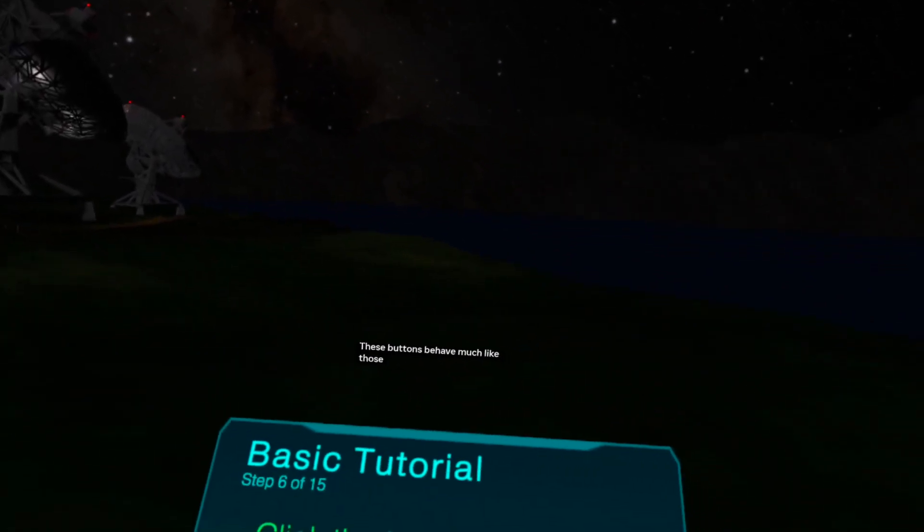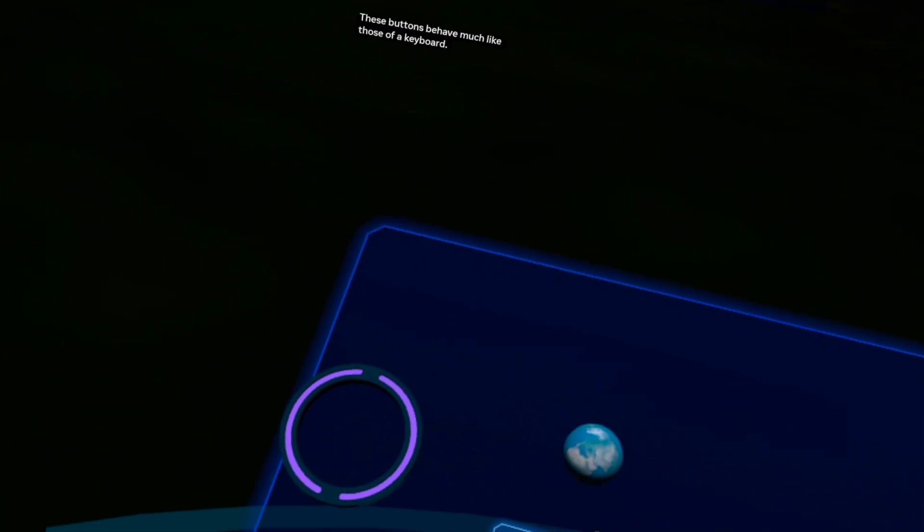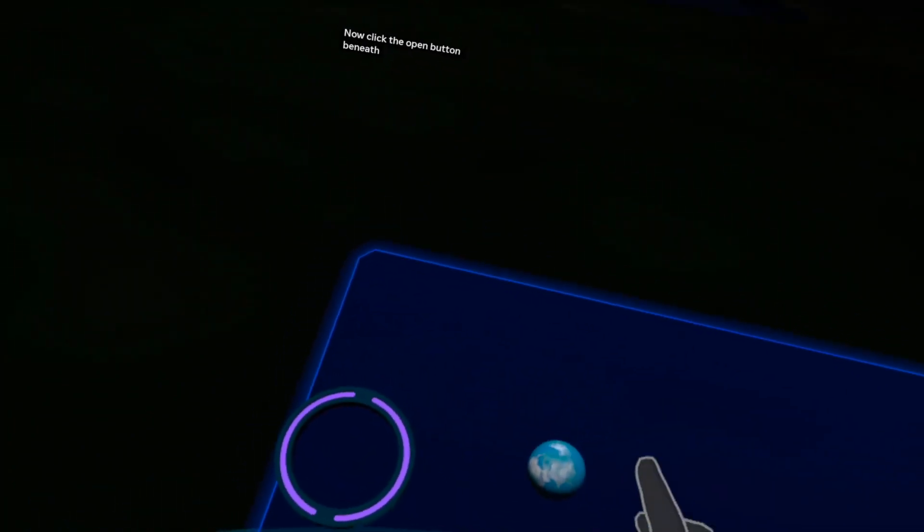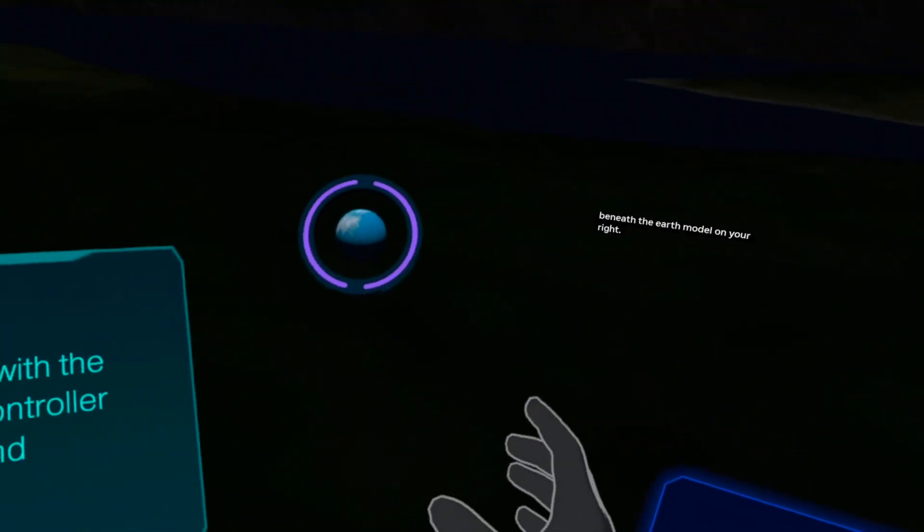The Atlas is controlled mainly through buttons. These buttons behave much like those of a keyboard. Now click the open button beneath the Earth model on your right. Some 3D objects can be picked up with your virtual controllers.